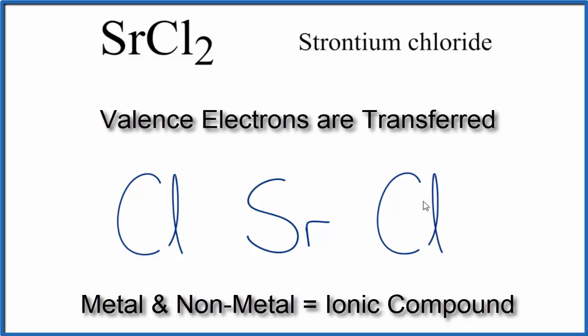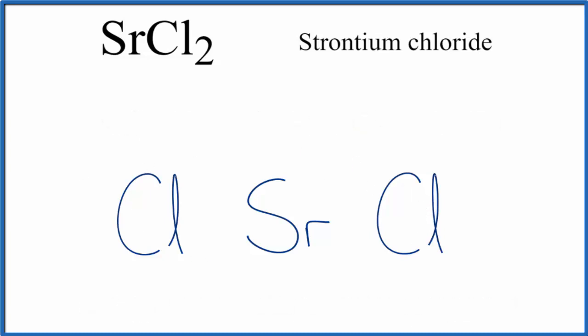And the valence electrons will be transferred in an ionic compound. So we have strontium, which is in group 2 on the periodic table, so it has 2 valence electrons. And then chlorine, that's in group 17, sometimes called 7A, it has 7 valence electrons.